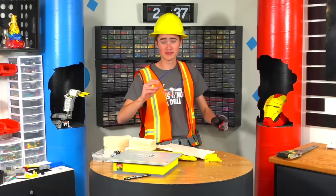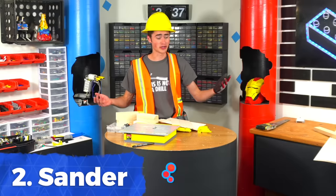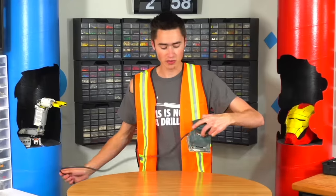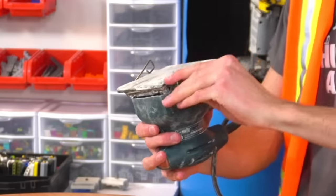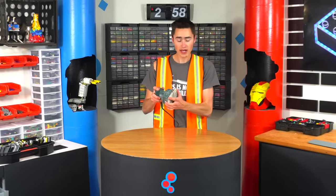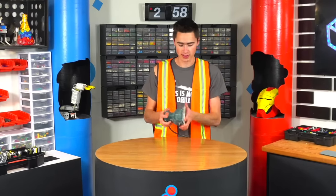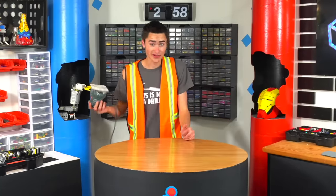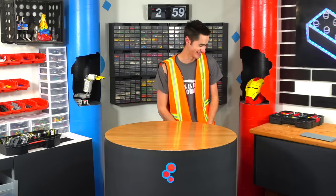This is an orbital sander. Basically what it does is you can take a piece of sandpaper, put it in here, and once you turn it on, this thing will vibrate, basically going in little circles and doing all the sanding work for you. Unfortunately, I don't have an orbital sander, so we're going to build one out of Lego.